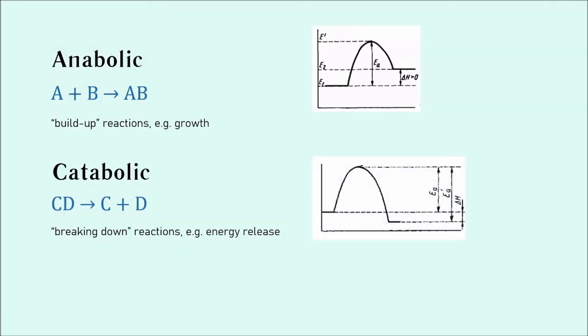And this is what the energy profile diagram would look like. As you can see, the products have less energy than the reagents. The term metabolism just refers to the sum of all chemical reactions in an organism. So the collective total of all the reactions that take place in an organism, that is referred to as metabolism. Enzymes catalyse both anabolic and catabolic reactions.